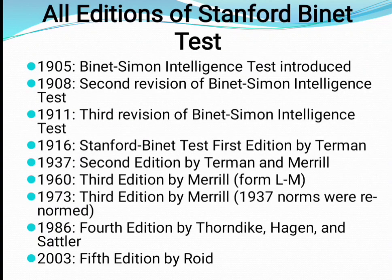This table shows all editions of the Stanford Binet test. Originally it was published in 1905 as the Binet-Simon scale, introduced by Binet and Simon. In 1908, the second revision appeared, and in 1911, the third revision appeared. In 1916, the first edition of the Stanford Binet test was published by Terman.